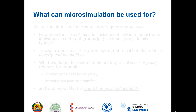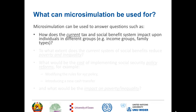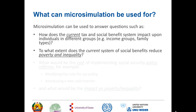What can micro simulation models be used for? Microsimulation can be used to answer questions such as: how does the current tax and social benefit system impact on individuals in different groups, for example different income groups or different family types? And also to what extent does the current system of social benefits reduce poverty and inequality? It's possible to simulate the current situation with the social benefits system switched on and also with them switched off, and the difference will be the impact of the current system on poverty and inequality.